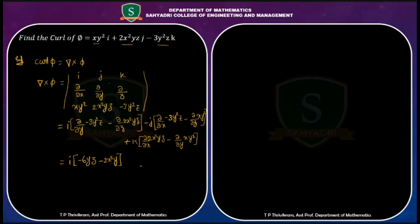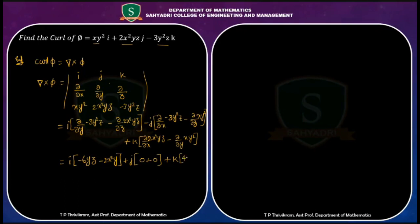Taking minus common gives plus j. For the j component we get 0, because differentiating −3y²z with respect to x and xy² with respect to z both give zero. For k: we get 4xyz minus 2xy.